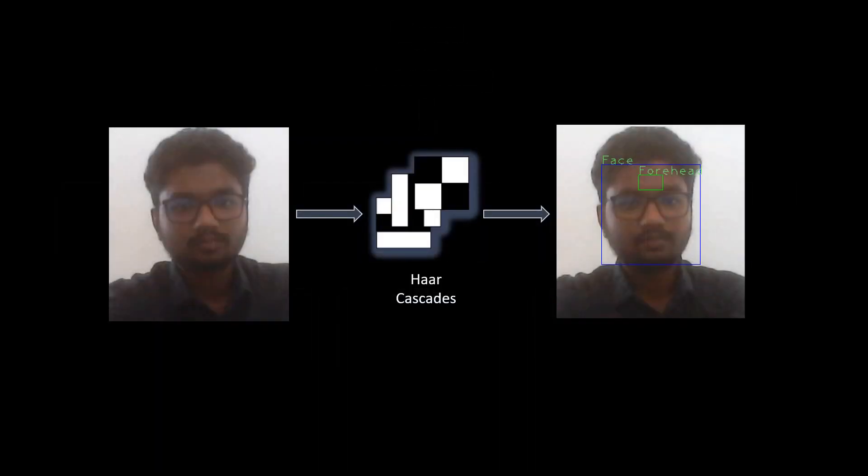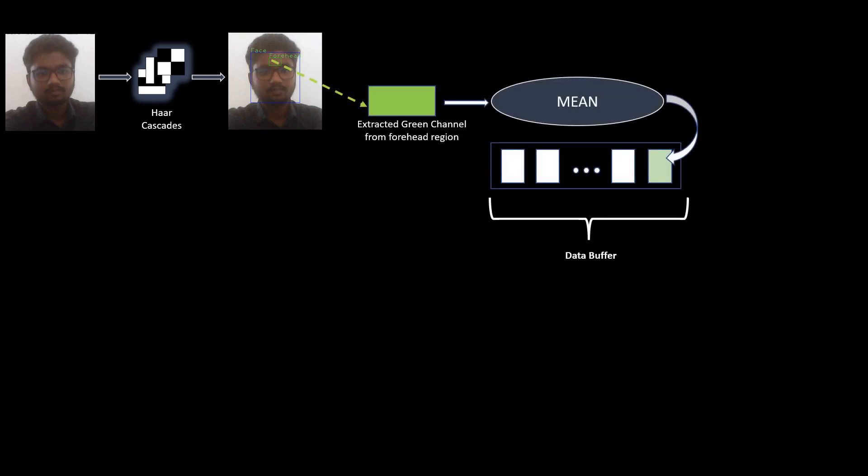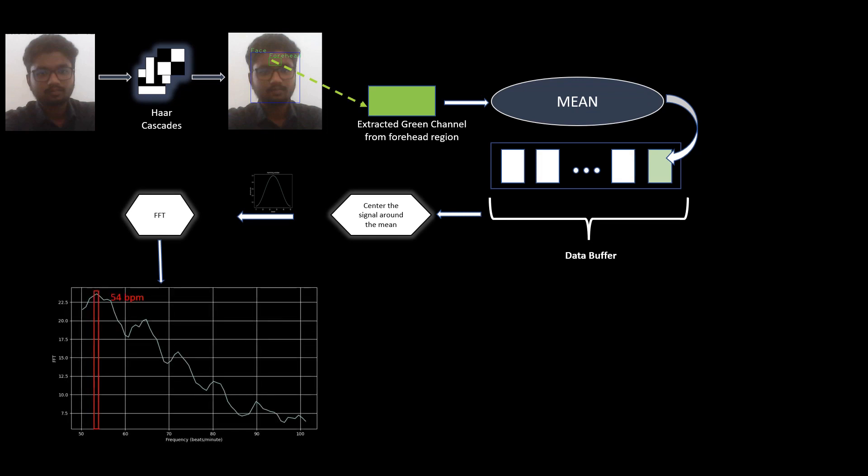The foremost tasks of face detection and forehead extraction are done with the help of Haar cascades. The average of the green channel intensity in the extracted forehead region is stored into a data buffer. The data stored is processed by centering it around the mean and applying the hamming window to observe the signal in the frequency range where the heart operates. The power spectral density is then estimated by observing the magnitude spectrum of the FFT signal. Finding the frequency component corresponding to the highest power gives the estimate of the heart rate.